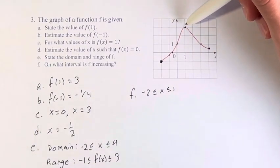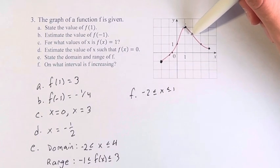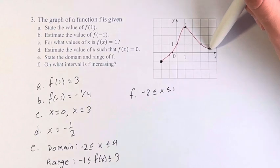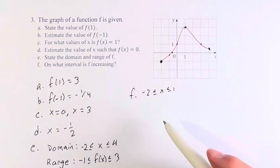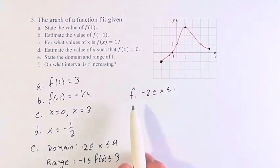Let's keep going to make sure there's no other interval. From this point onwards, as we continue to the right, the function's value is getting lower, so it's decreasing. Therefore, this is the only interval where f is increasing, and that's our final answer.